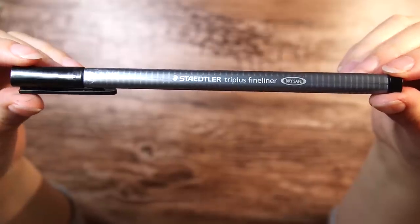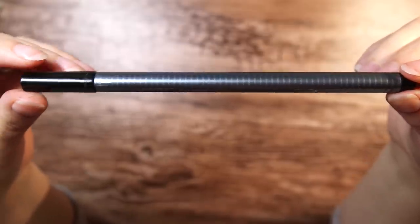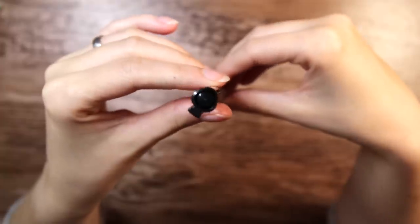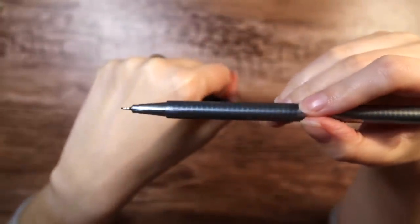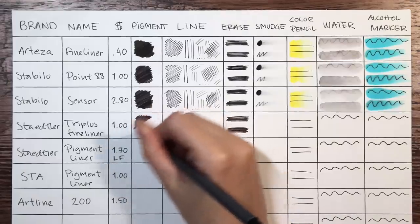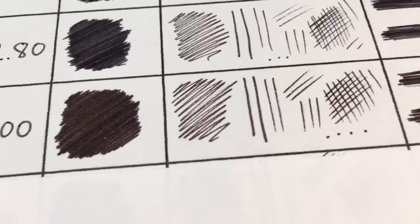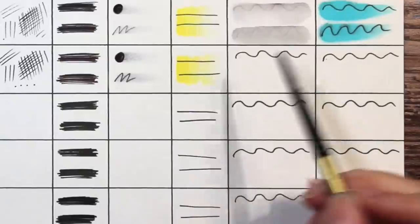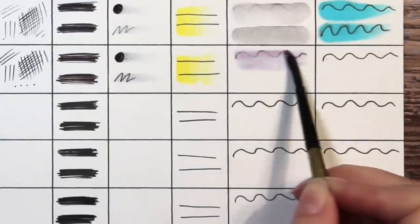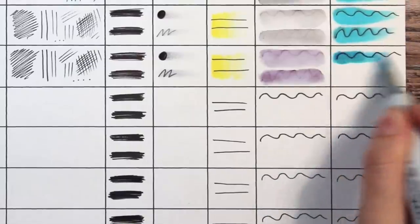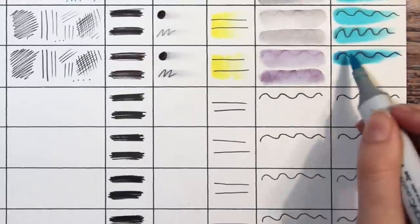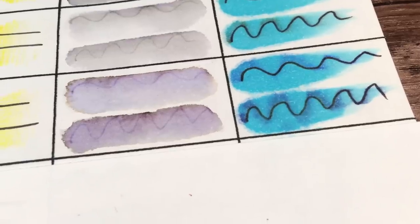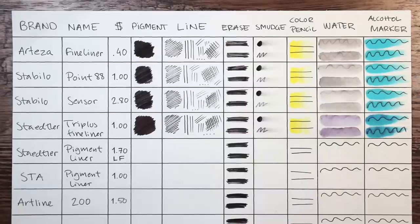Next is the Stedler Triplus fineliner for about one dollar. It looks very similar to the Artessa one with its triangular shape and it also comes in a bunch of different colors. The ink has a bit of a warmer tone to it and you can clearly see the pen strokes. It is holding up just as well as the other pens until we get to the water and alcohol test where it completely fails on both the tests. It is a nice pen to doodle with I think personally but make sure to keep this one away from watercolors and markers.